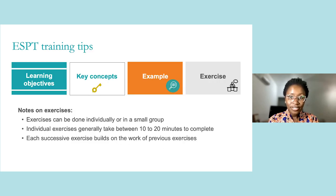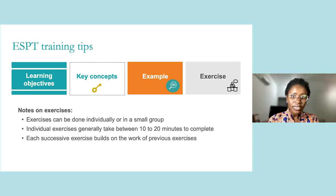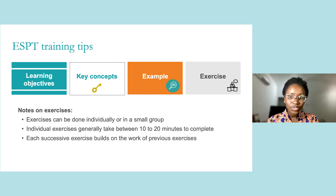You will see types of slides repeated throughout the training. Learning objectives will be presented at the start of each module on a turquoise background. Some background knowledge on entomological surveillance is required, so key concepts are reviewed at the start of each module as needed. An illustrative example is used throughout all training modules, distinguished by an orange slide. A gray slide with a desk icon denotes slides with exercises, which help solidify your learning. Exercises can be done individually or in a small group, should take between 10 to 20 minutes to complete, and each successive exercise builds on the work of the previous exercises.